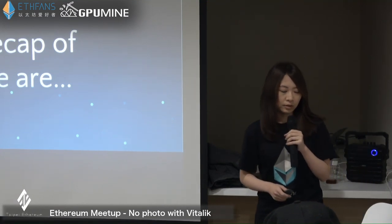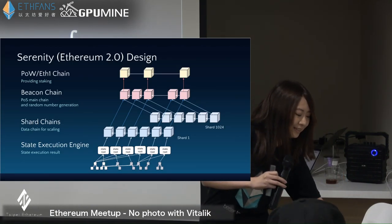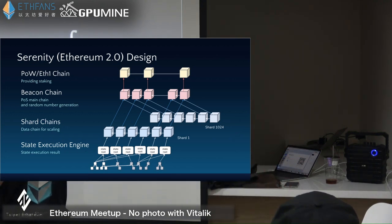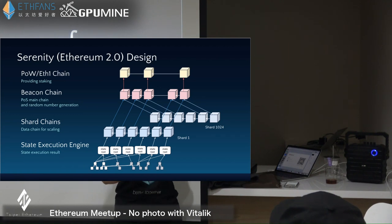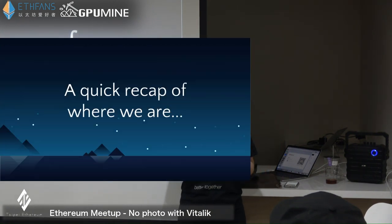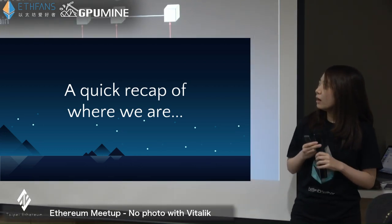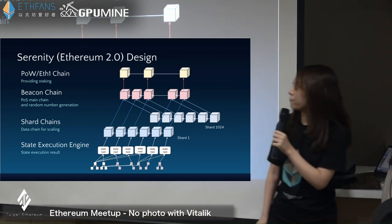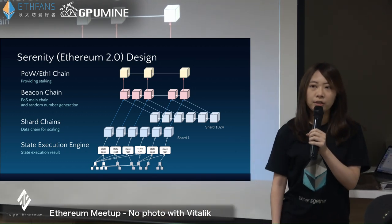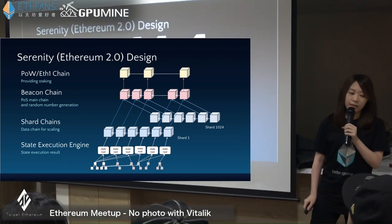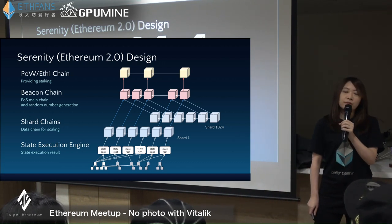Let's do a quick recap of where we are right now. This is the current Serenity design for Serenity 2.0. You can see that there will be four layers. On the top is the Serenity 1.0 proof-of-work chain we are using right now, and then there is the Beacon Chain that I'm going to focus on today.